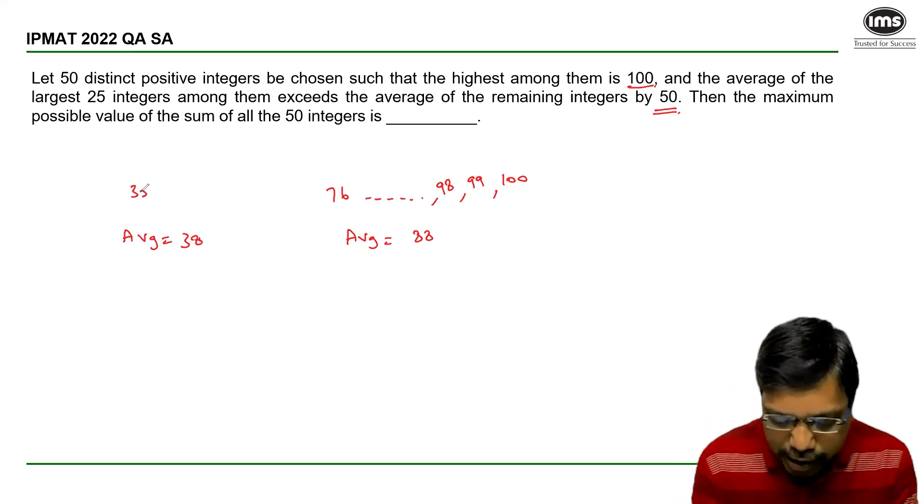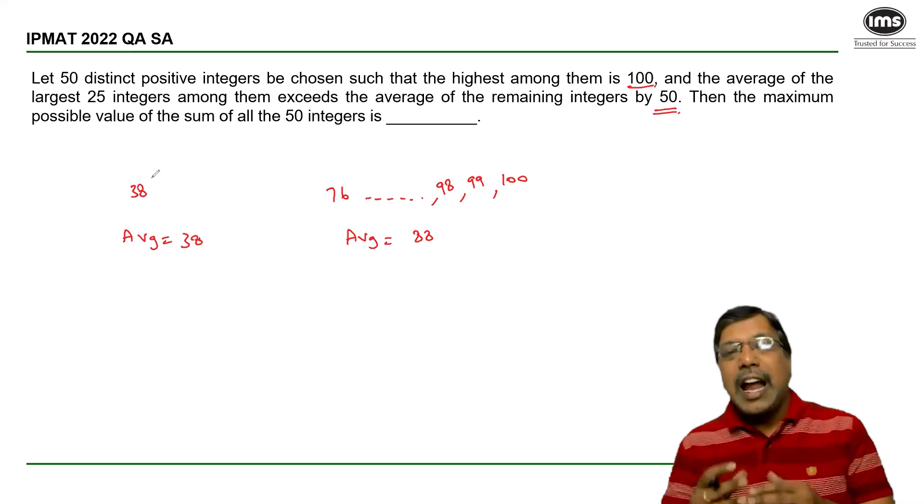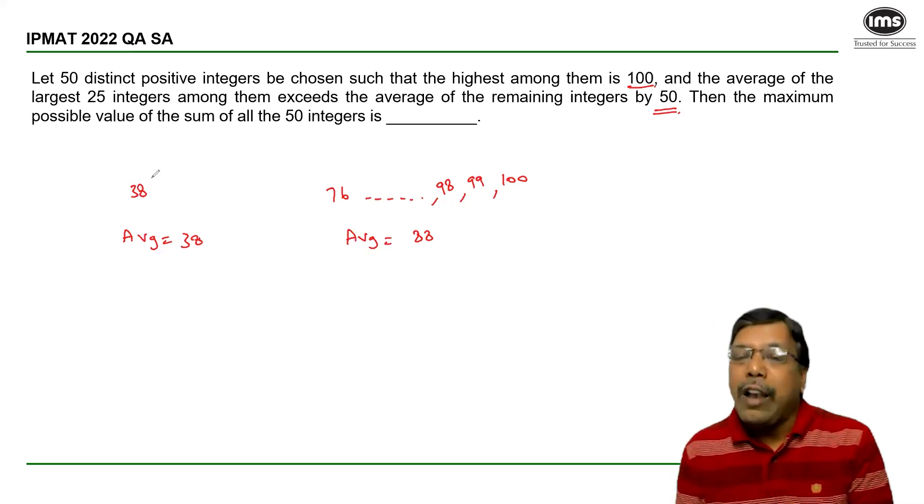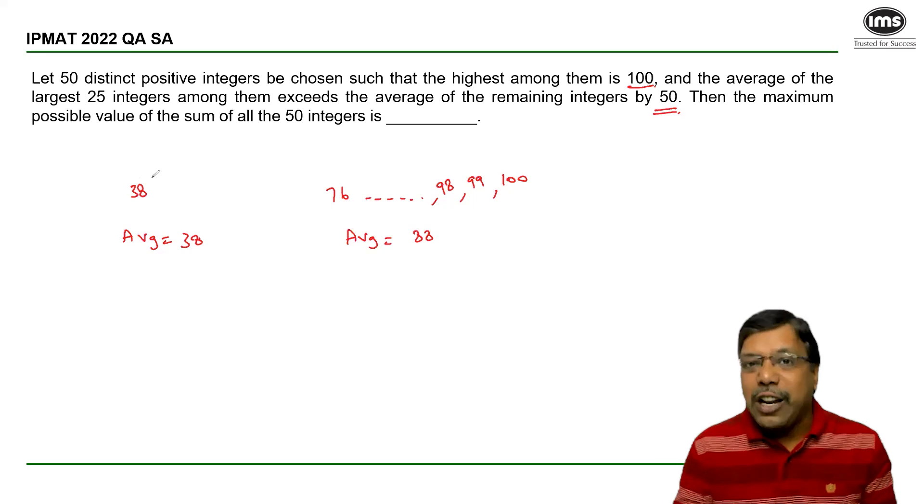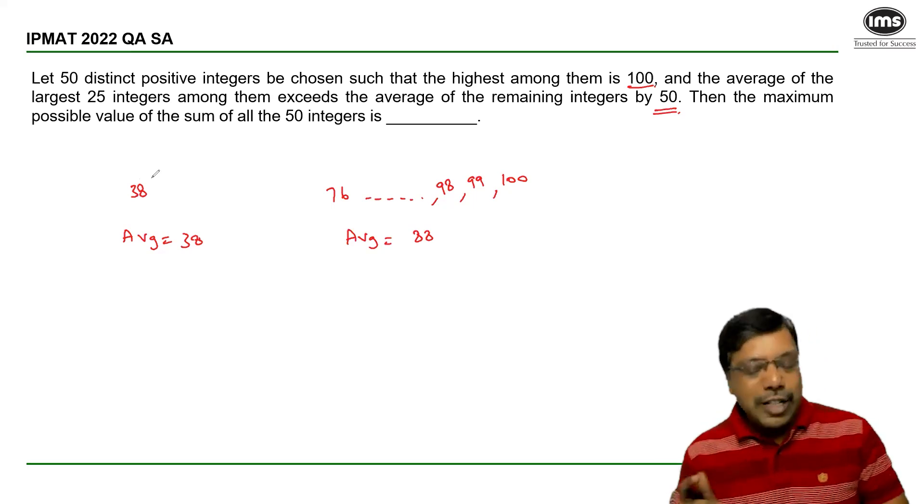I can consider that 38 is the middle number and write down 12 integers before that and after that to get 25 integers with an average of 38.